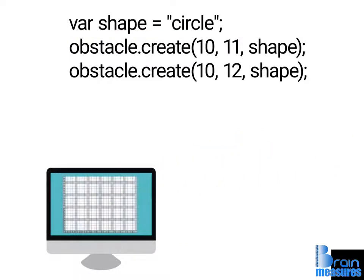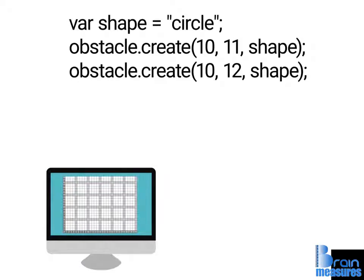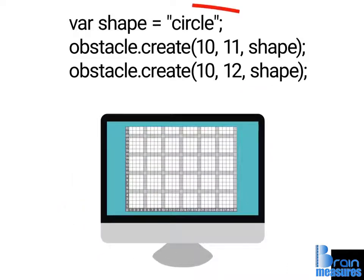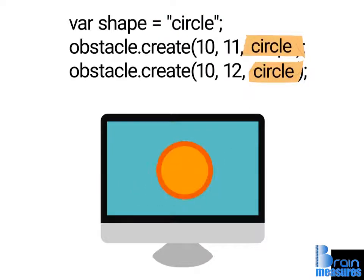When the computer tries to create an obstacle at the position 10, 11, it'll realize that it needs to check its memory for the shape of the obstacle. The computer will take the value in the variable shape and replace the variable's name with its value. Now the computer knows it needs to create a circular obstacle. This process is repeated for the next obstacle.create instruction.